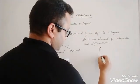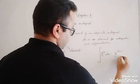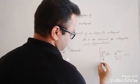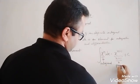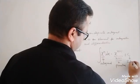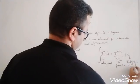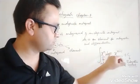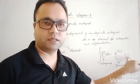Let us take one formula: ∫x^n dx = x^(n+1) / (n+1) + C. Here x^n is the integrand, x^(n+1)/(n+1) is the primitive, and C is the integration constant. In the case of indefinite integrals, there is always a constant called the integration constant.